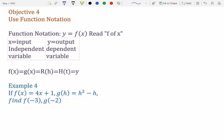Objective 4. Use function notation. So function notation is f(x). That's the same thing as y. x is your input. That's your independent variable. And y is your output. That's your dependent variable.